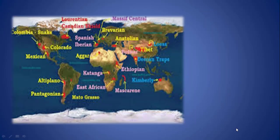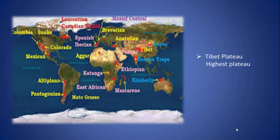Dear students, let's look at some examples of the intermontane plateau of the world. The first example is the Tibetan Plateau. It is situated in Asia. The Tibetan Plateau is the largest and highest plateau of the world and is also known as the Roof of the World. It is surrounded by the Himalayas in the south and the Kunlun Mountains in the north. Another example of the intermontane plateau is the Altiplano Plateau, also known as the Bolivian Plateau.